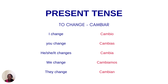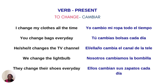So that is an example of how we conjugate the present tense. So let's have a look at a few examples. We're still using the verb 'to change,' and I've put the Spanish equivalent next to the corresponding sentence. I change my clothes all the time. You change bags every day. He, she, it changes the TV channel.